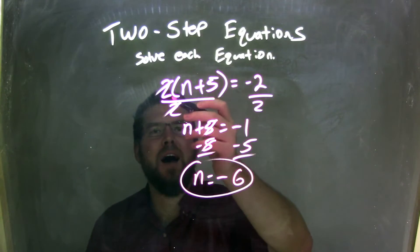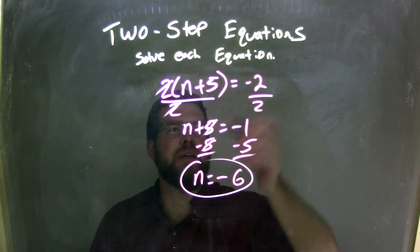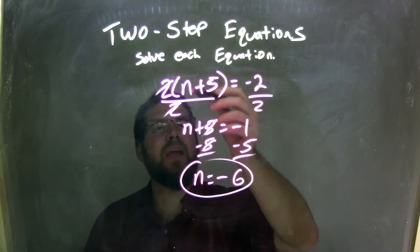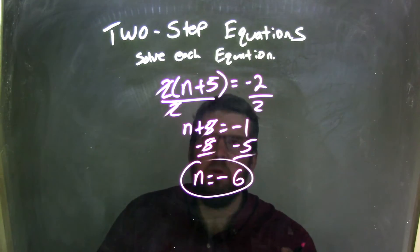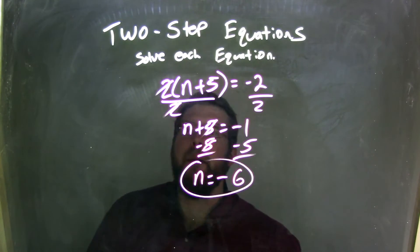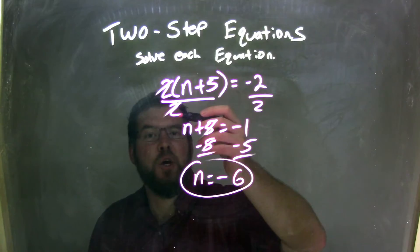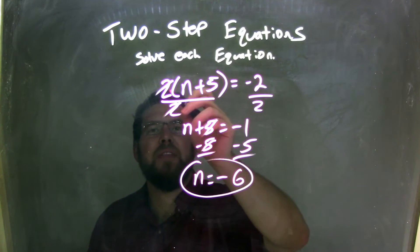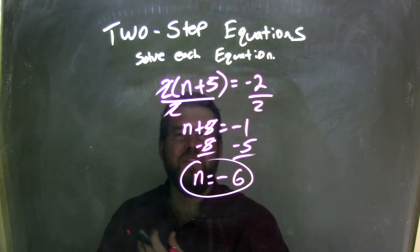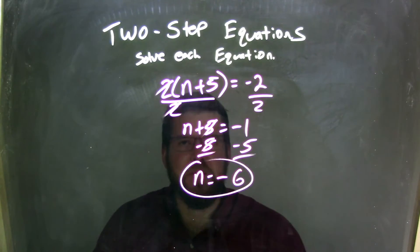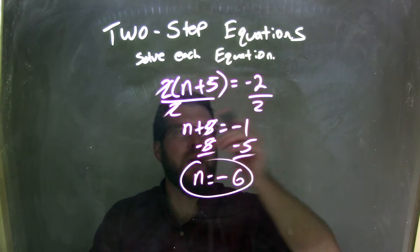Let's recap. We had 2 times, in parentheses, n plus 5 equals negative 2. Now, you could have distributed that 2 across first, which totally could have been fine, and it could have gone from there, but I'd like to get rid of that multiplication if I can. So I took that, I multiplied by 2 on the outside, and divided 2, the opposite of multiplication being division. Divided by 2 to both sides.